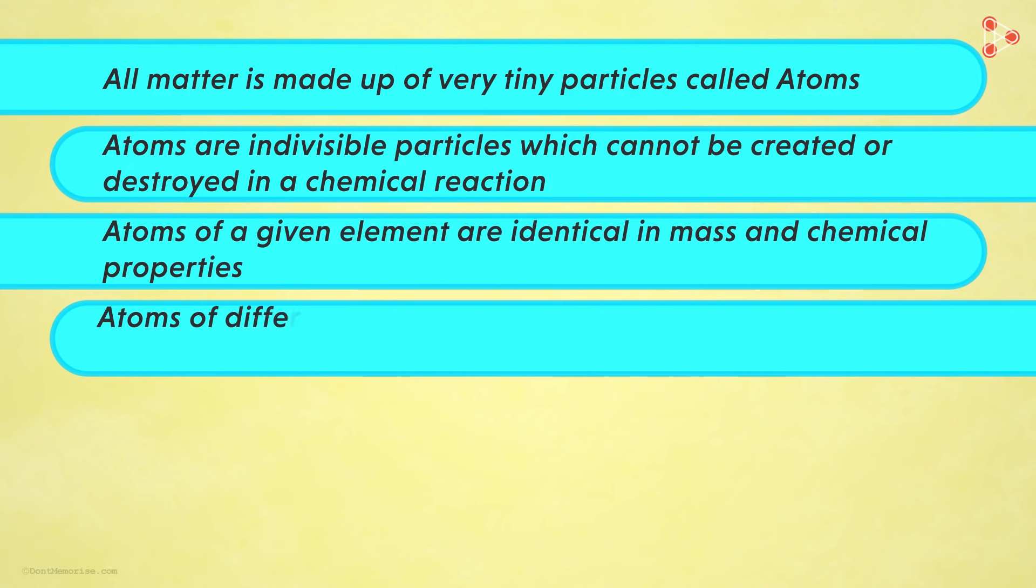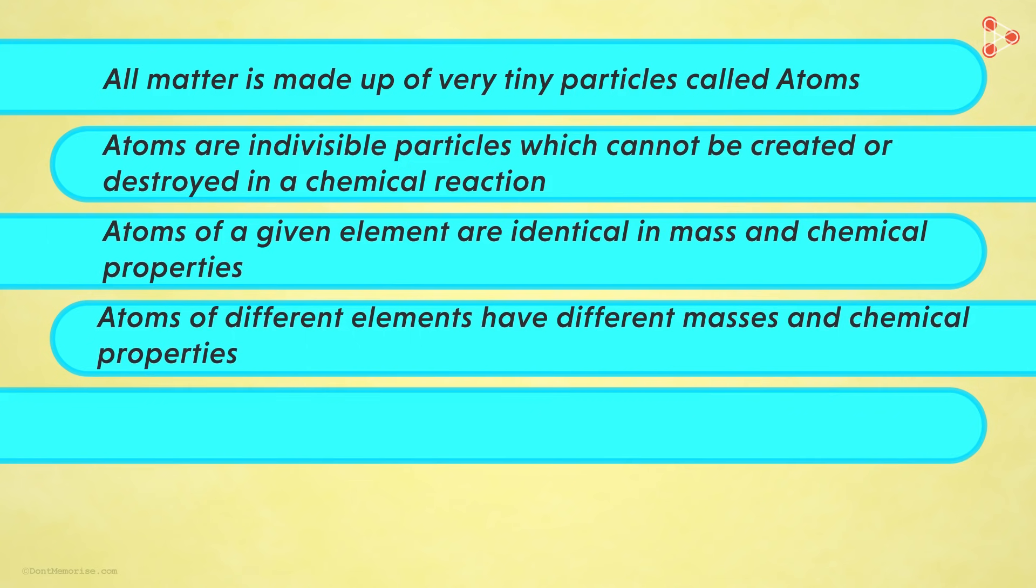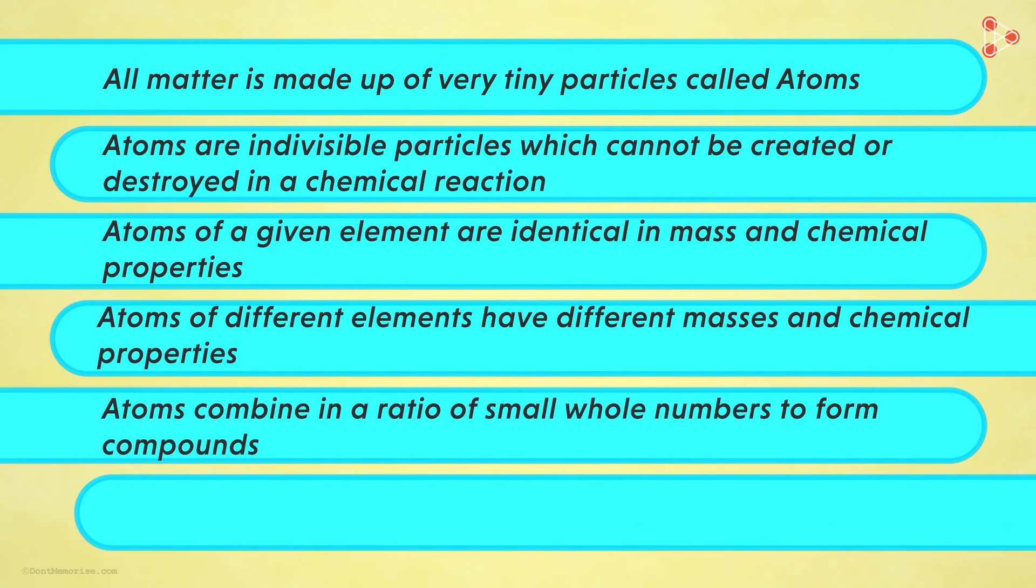Similarly, fourth postulate was that atoms of different elements have different masses and chemical properties. Fifth postulate stated that atoms combine in a ratio of small whole numbers to form compounds. And lastly, the relative number and kinds of atoms are constant in a given compound.